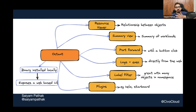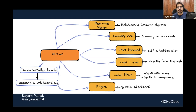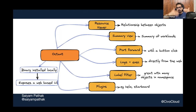Octant gives you a summary view of workloads. You can do port forwarding directly with a button click instead of typing the kubectl port-forward command. Logs and exec are also available. There's a label filter, which is great when you have thousands of objects in a namespace — you can filter by labels for easy segregation.